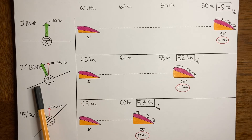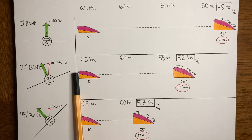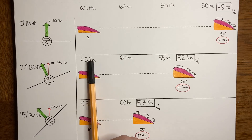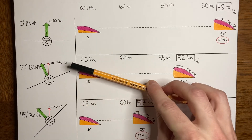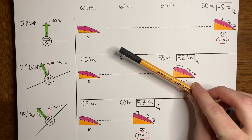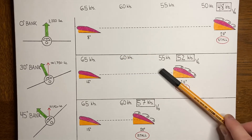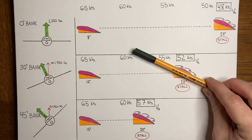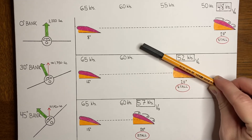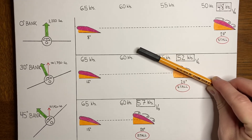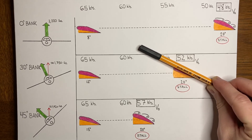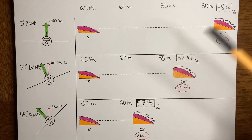The plane in the 30 degree bank started at a slightly smaller angle of attack at 65 knots. As it slows down, that angle of attack increases: 13, 14, 15, 16, 17 — down to 60 knots, down to 55 knots — and at 52 knots it hits the 20 degree critical angle of attack and stalls. So it made it a little bit slower before stalling compared to the 45 degree bank airplane.